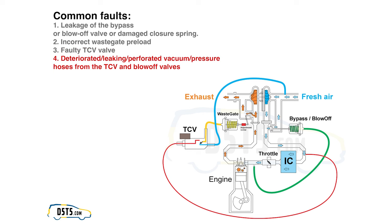If any hoses controlling the TCV or blow-off valves are leaking, the regulation won't work correctly and the engine won't deliver the expected performance. If there is a leak anywhere in the system before or after the turbocharger, the system won't function correctly, and it won't deliver the expected performance due to the loss of air or exhaust gas pressure. That's a simplified overview of turbocharger regulation and a quick troubleshooting guide.